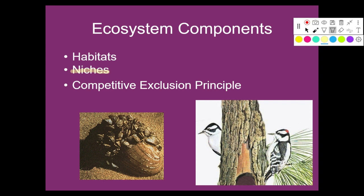The competitive exclusion principle states that if two species try to occupy the same niche, it won't work out well for one of them. If one species has even a slight advantage — like better daytime vision for finding food — that species will grow a larger, healthier population. The other species, unable to compete as effectively, will see its population decline. So if two species compete for the same food, habitat, or mates and one has an advantage, it will outcompete the other.